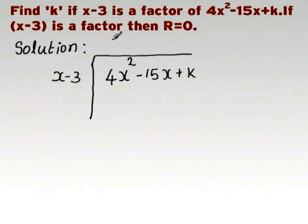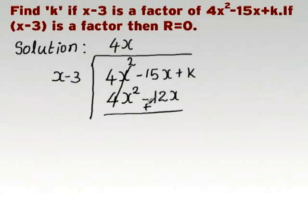Then, we start dividing by the factor x minus 3. We get 4x as the first term in the quotient. We get minus 3x plus k is the remainder.